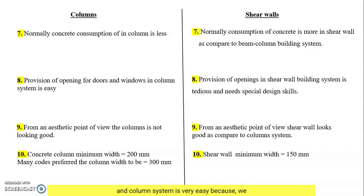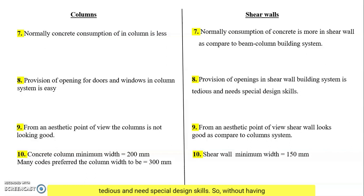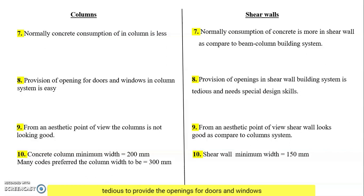Provision of openings for doors and windows in a column system is very easy, because we can partition between each column and leave the space for doors and windows. But provision of openings in a shear wall building system is tedious and requires special design skills.